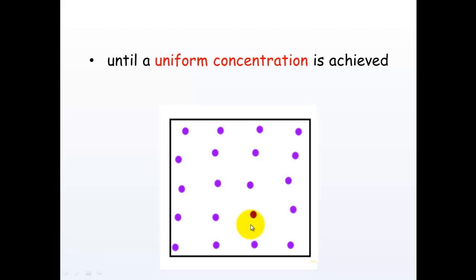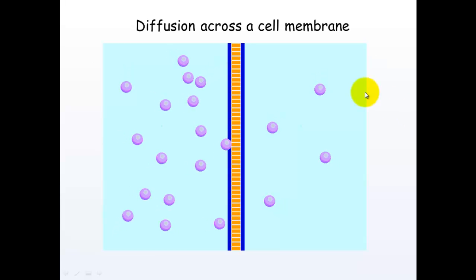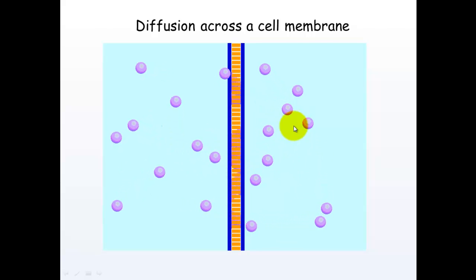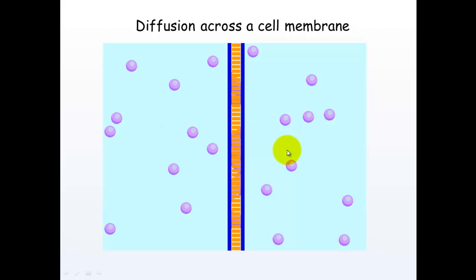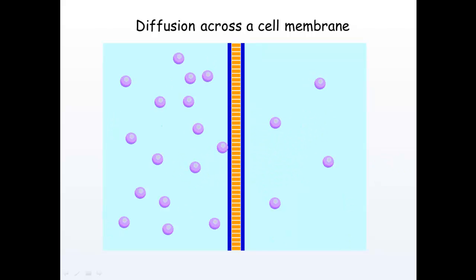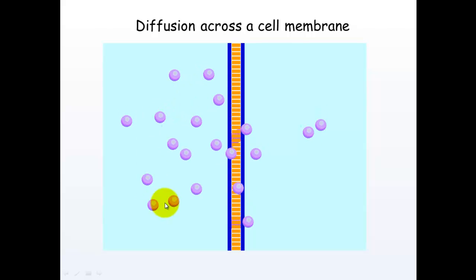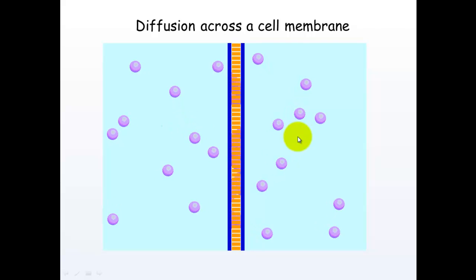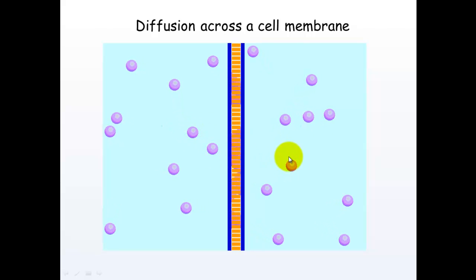It's a little like spraying air freshener in a room — it smells really strong in one area at the start, but after about 10 minutes the entire room smells about the same because a uniform concentration is achieved. This occurs across cell membranes, and this is one of the ways in which gas particles exchange both across cell membranes and across alveoli. You'll see the particles all started off on one side and they'll continue to diffuse across from high concentration to low concentration until there are even concentrations.